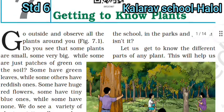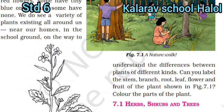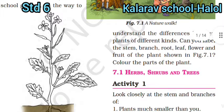Let us get to know the different parts of any plant. This will help us understand the differences between plants of different kinds. Can you label the stem, branch, root, leaf, flower and fruit of the plant shown in figure 7.1? We have to see the names of the parts, label them, draw them, and color them.